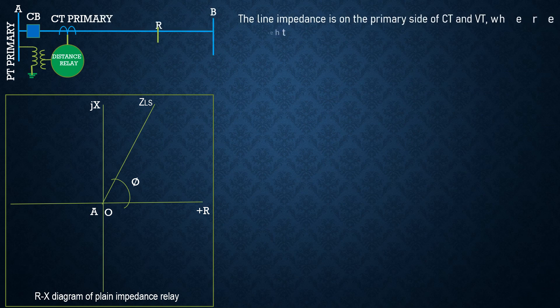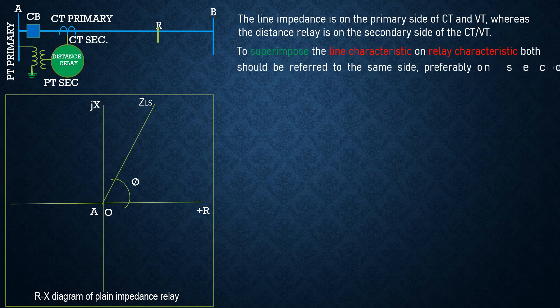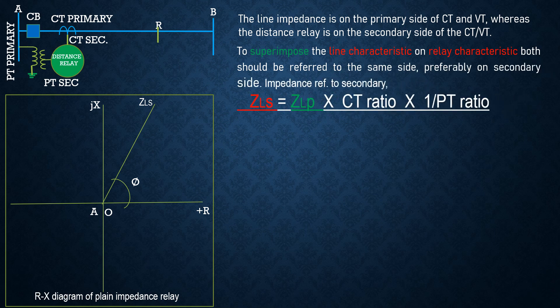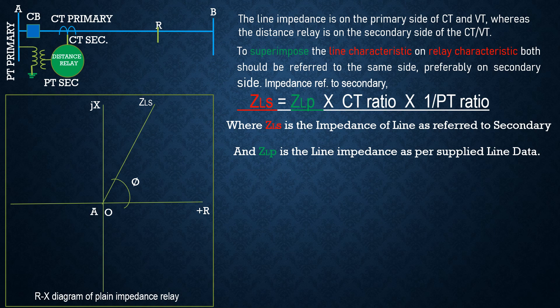The line impedance is on the primary side of the CT and VT, whereas the distance relay is on the secondary side. To superimpose the line characteristics on the relay characteristic, both should be referred to the same side — preferably the secondary side. Therefore, the impedance of the primary as referred to the secondary is: ZLS = ZLP × (CT ratio) × (1 / PT ratio), where ZLS is the line impedance referred to secondary and ZLP is the impedance from the supplied line data.